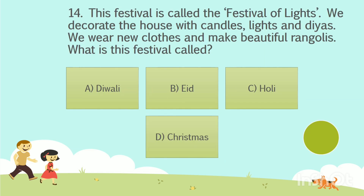Question No. 14: This festival is called the Festival of Lights. We decorate the house with candles, lights and diyas. We wear new clothes and make beautiful rangolis. What is this festival called? Option A: Diwali. Option B: Eid. Option C: Holi. Option D: Christmas. Your time starts now. The answer is Option A: Diwali.